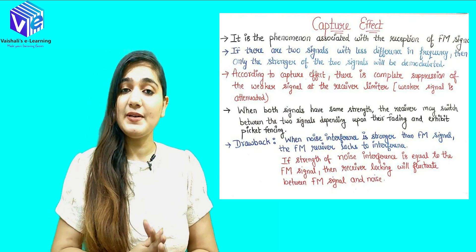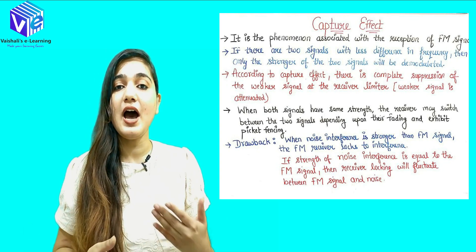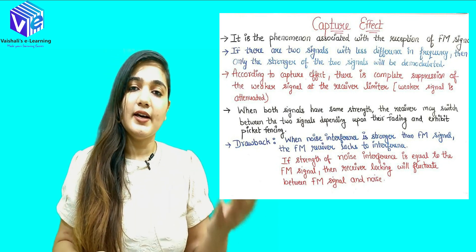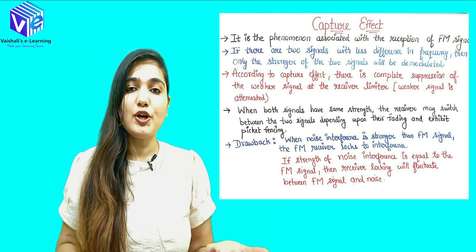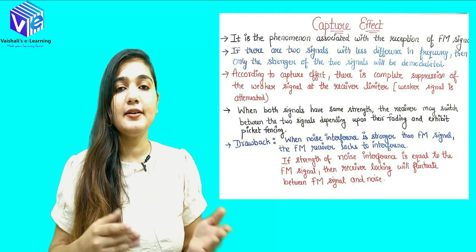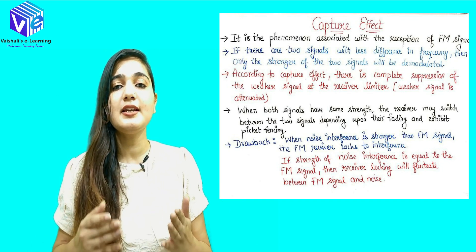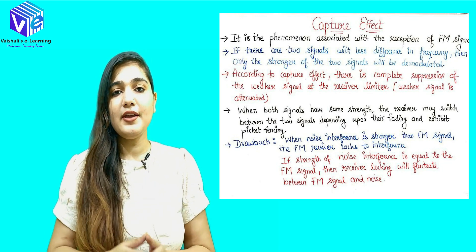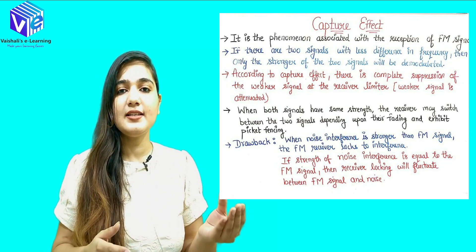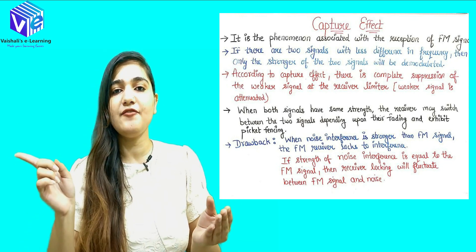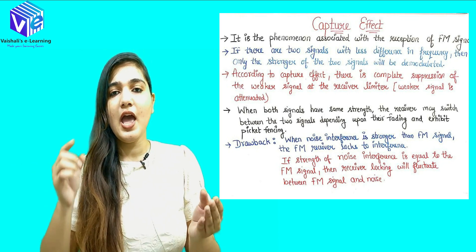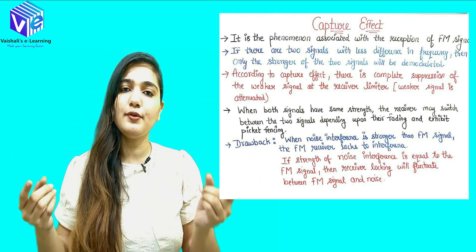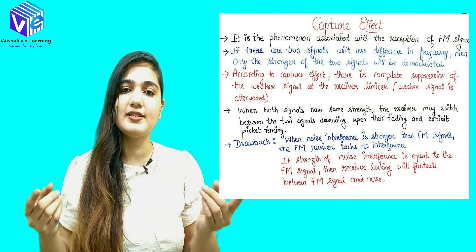When the two signals have equal strength, the demodulator will fluctuate between the two signals depending upon the fading of the signal. If one signal is fading out, it will completely fluctuate to the other signal, and when that signal fades, it will fluctuate back to the first signal.